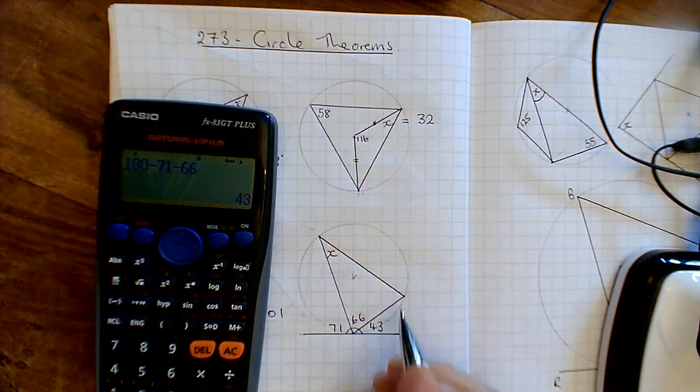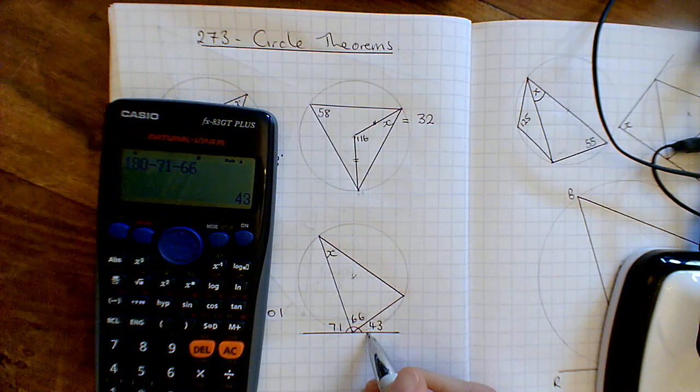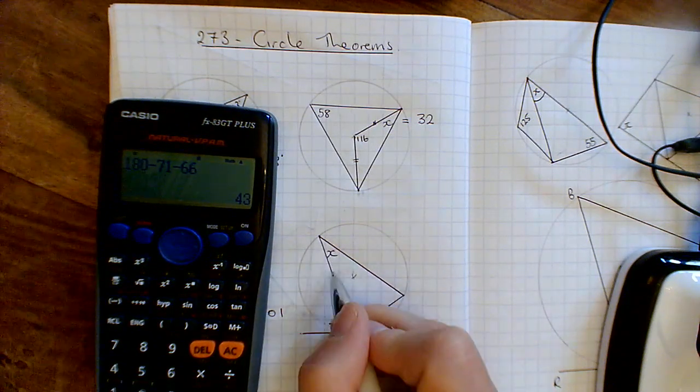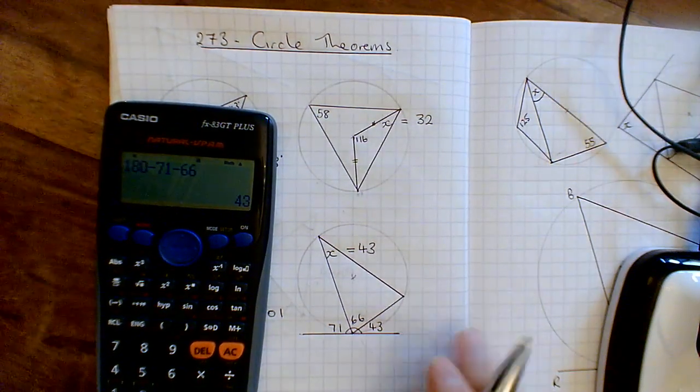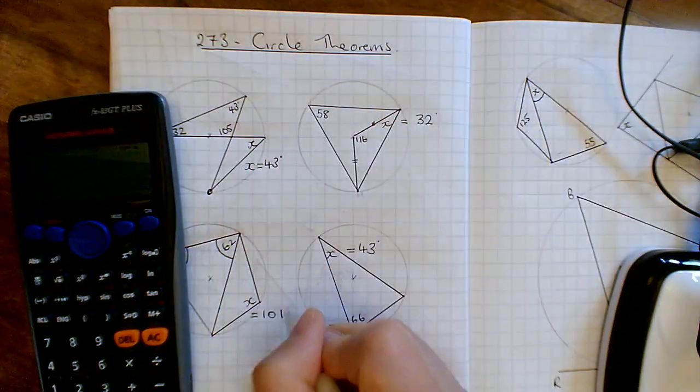And then the alternate segment theorem, where you draw a tangent and you draw a chord, you make an angle here. That's 43. And if you draw an angle anywhere you want off this chord into the centre, you get the same results. So that's 43 up there. 43 degrees. I should put the degree sign in there. It's just a dot at the moment.